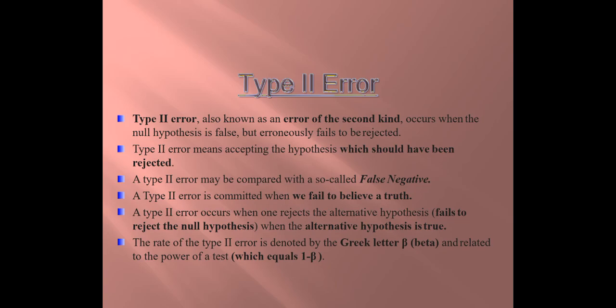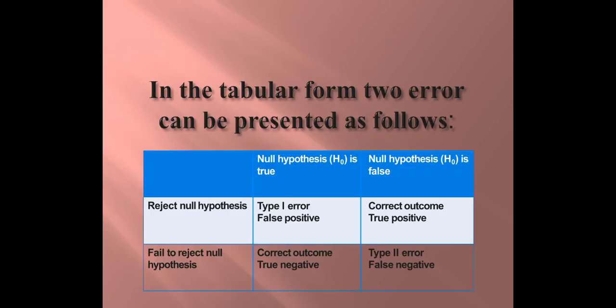Remember, Type 2 error occurs when one rejects the alternative hypothesis when the alternative hypothesis is true. The rate of the Type 2 error is denoted by the Greek letter beta and is related to the power of the test. Type 2 error is also related to the power of the test, which is equal to 1 minus beta.